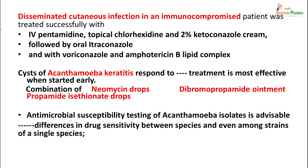Cases of Acanthamoeba keratitis usually respond, if treated early, to a combination of neomycin drops, dibromopropamidine ointment, and propamidine isethionate drops. Antimicrobial susceptibility testing of Acanthamoeba isolates is advisable, since differences in drug sensitivity between distinct species can occur, and it can also differ between strains of the same species. Knowing the antimicrobial susceptibility will help guide treatment.